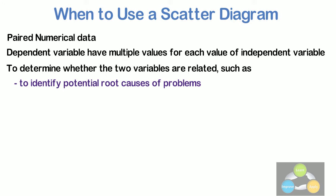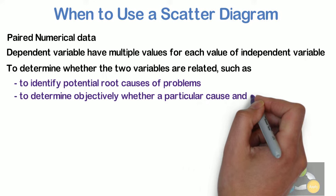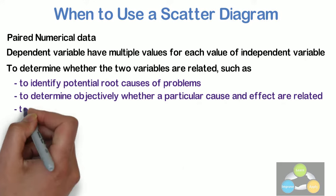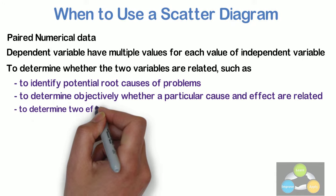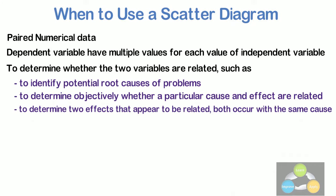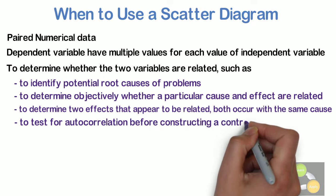After brainstorming causes and effects using a Fishbone diagram to determine objectively whether a particular cause and effect are related. When determining whether two effects that appear to be related both occur with the same cause. And when testing the auto correlation before constructing a control chart.